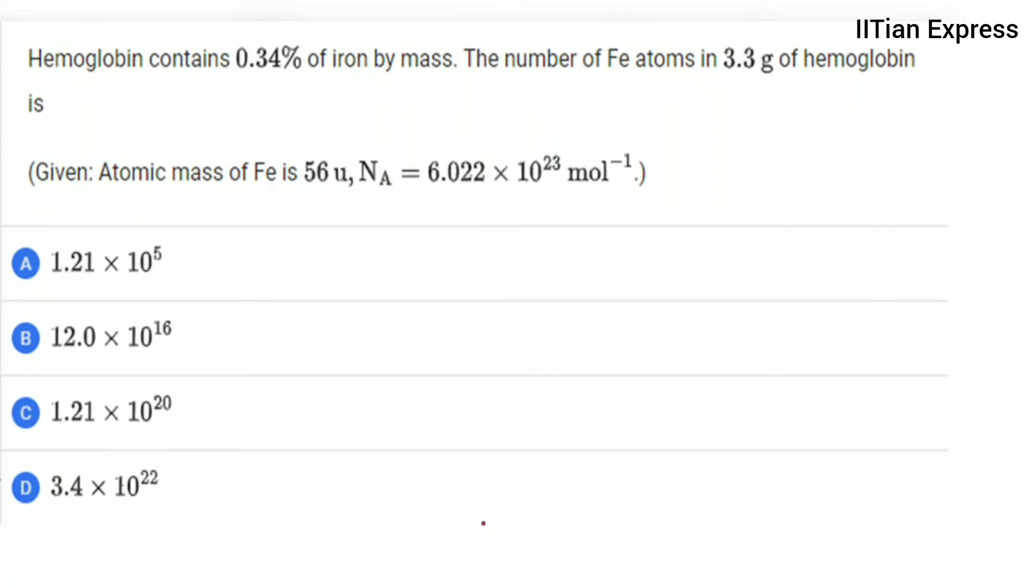Hello everyone, how are you all? Again today we are having a question from Zayman's 2022 paper. This question reads: hemoglobin contains 0.34% of iron by mass. We are supposed to calculate the number of Fe atoms in 3.3 grams of hemoglobin.